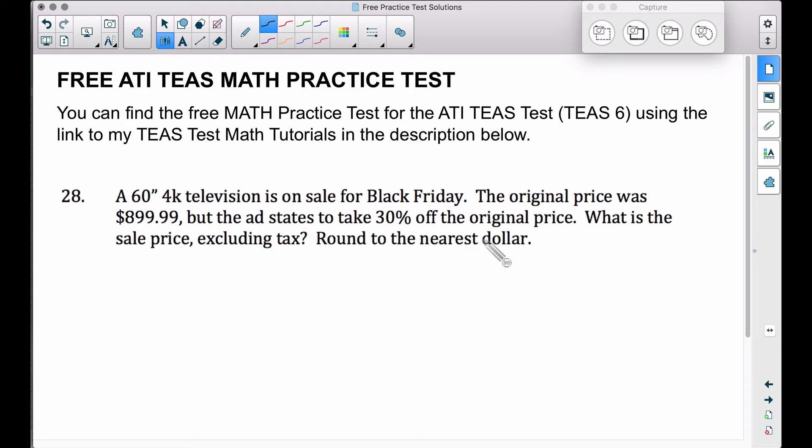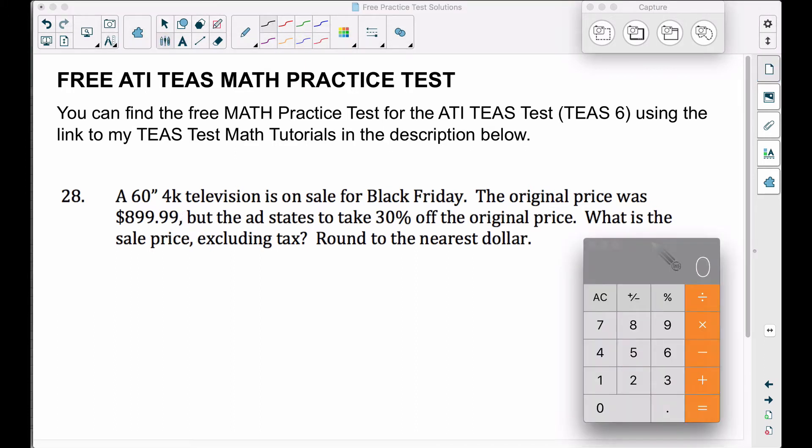Now, this problem works the way you probably think it should work because we want to take 30% off of this price. I'm going to show you two ways to do this. We'll get the same answer. You can pick which way you like the best. Since we are taking 30% off the original price, we know what the original price is. So we can take 30%, which is 0.30 or just 0.3. We want to take 30% of the original price, which is $899.99.